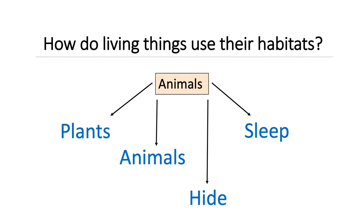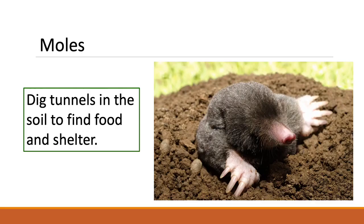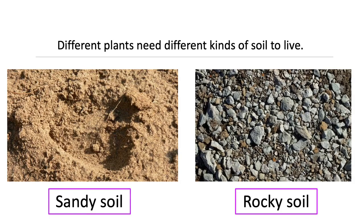Animals use their habitat to hide and sleep. Animals such as moles dig tunnels in the soil to find food and shelter. We all know that we have different kinds of plants — plants use the soil and water to make their own food.